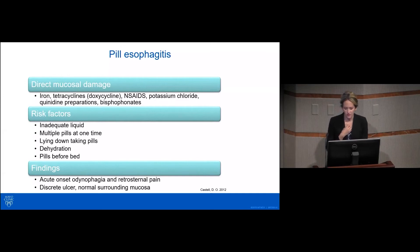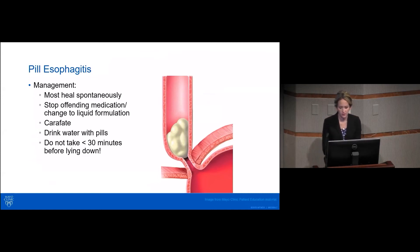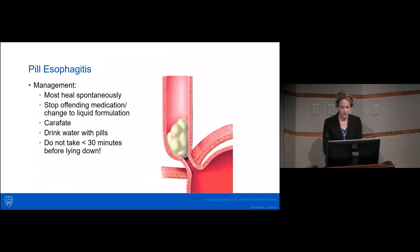Patients generally present with acute odynophagia and retrosternal pain. On endoscopy, you would see a discrete ulcer with normal surrounding mucosa. Most of these heal spontaneously, and patients often don't even seek care. If possible, stop the offending medication, change to a liquid formulation, and carafate can be used to manage symptoms and help the ulcer heal. It's important to drink water with pills and avoid taking medications within 30 minutes before lying down.